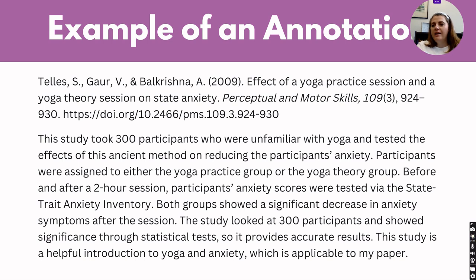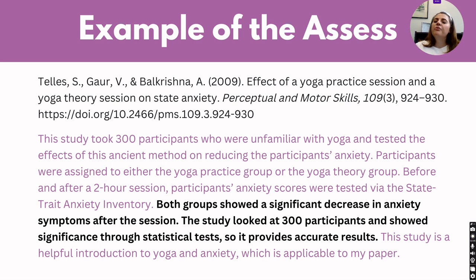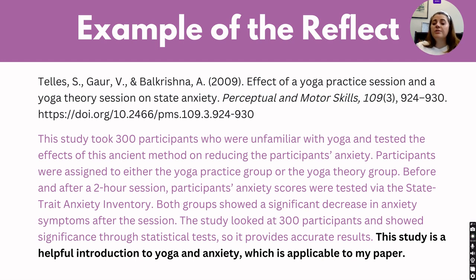Here's an example of an annotation. At the top, it always starts with the APA citation and then a short paragraph below. Breaking down this paragraph: for the summary, it's the first chunk — looking at the study taking 300 participants, what they were assigned, what was happening, what that source was about. For assessing, it's the middle chunk — looking at what the research found, showing significance through statistical tests and providing those results. Finally, we're reflecting — that last sentence: 'this study is a helpful introduction to yoga and anxiety, which is applicable to my paper.' So it's looking at how this is going to work for your research, not necessarily whether the research is good or bad.